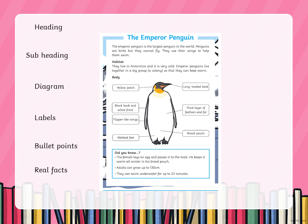So the first thing I'm looking for is the heading. Now the heading is like a title — it tells you what the whole piece of writing or the whole book is going to be about. Can you spot where the heading is? Right up at the top it says 'The Emperor Penguin.'